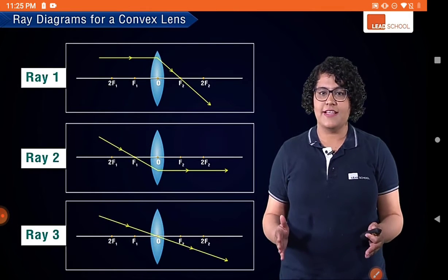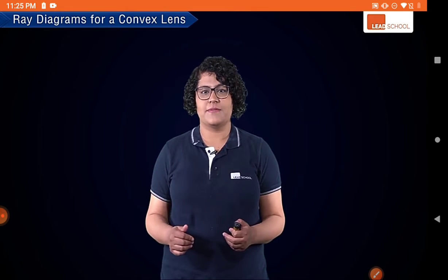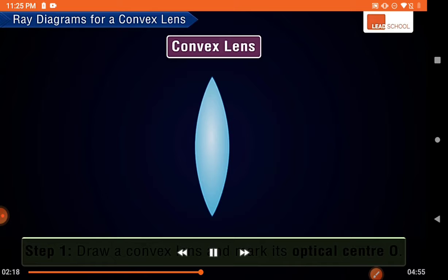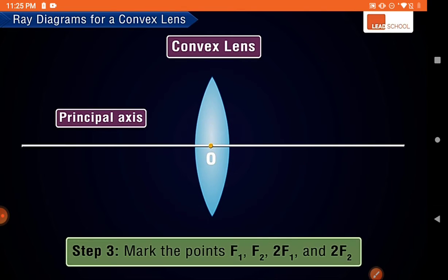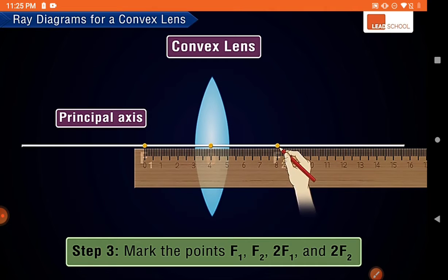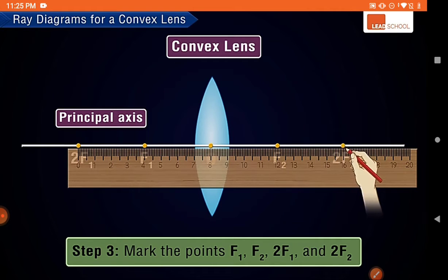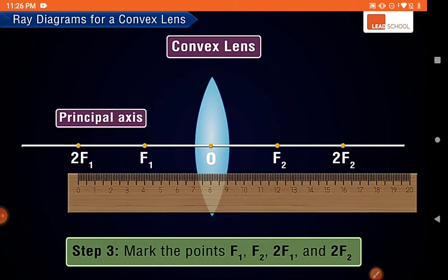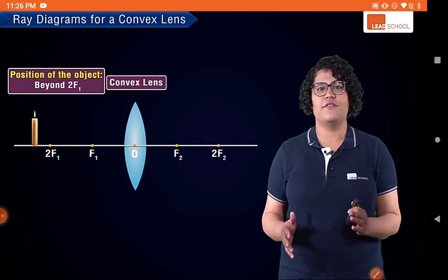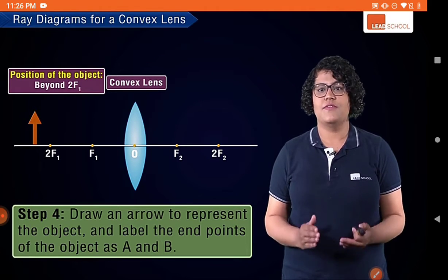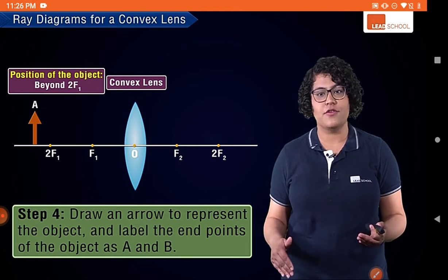To draw ray diagrams for a convex lens we can use any two of these three rays. First, draw the convex lens and mark its optical center O, then draw the principal axis through O. Mark F1 and F2 at equal distances from O on either side, and mark 2F1 and 2F2 at the same distance again from F1 and F2 respectively, ensuring all four segments are equal. Place the object beyond 2F1, represented by an upward-pointing arrow, labeling its tip A and base B.